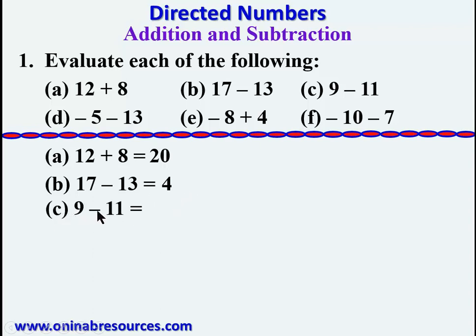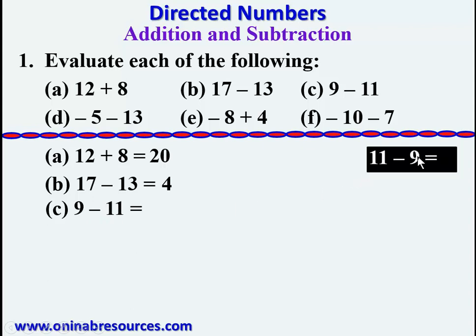For part c: 9 minus 11. This is something most of us are not familiar with — taking a large number away from a small number. We treat it normally as 11 minus 9, which gives 2. Therefore 9 minus 11 will be the negative of that, giving us negative 2.